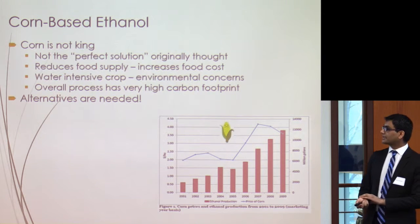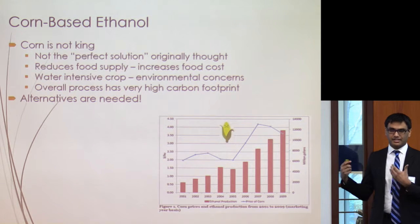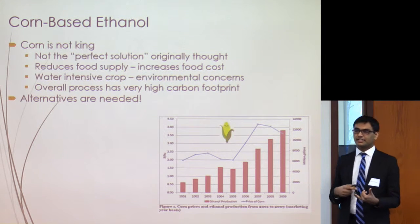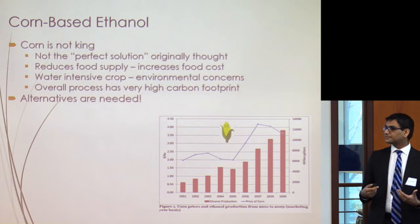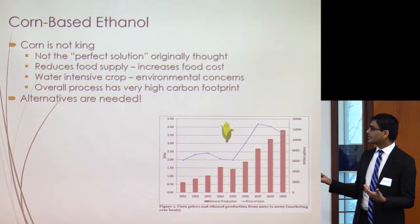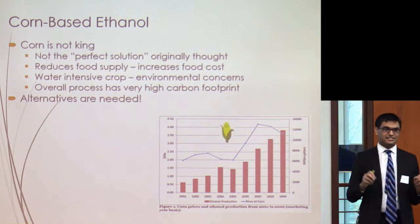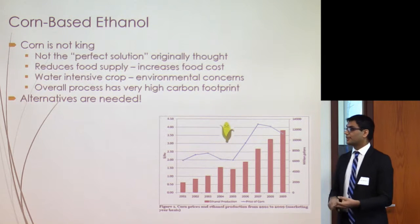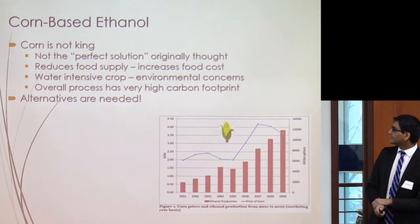Corn is a water-intensive crop, so growing more of it becomes simply unsustainable. Additionally, growing corn uses a lot of insecticides and pesticides, all of which end up running off into groundwater and contaminating it — an environmental concern for the future. And finally, the overall corn ethanol process has a very high carbon footprint. It was seen as a green energy solution, but it actually does not produce as much energy as is put in to make the ethanol. All of these problems lead to one thing: we need an alternative to make ethanol.